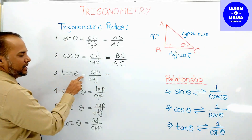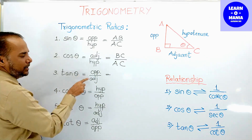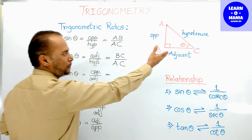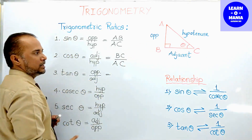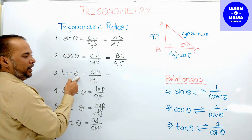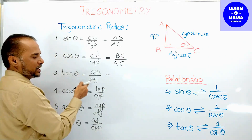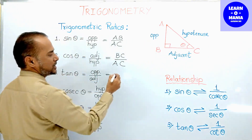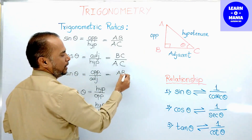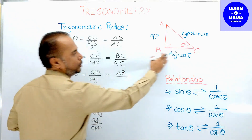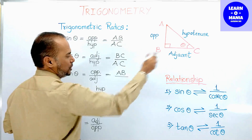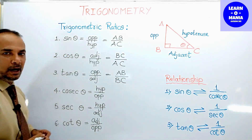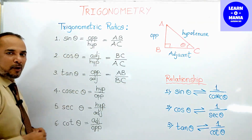Next, tan theta. Tan theta is always equal to opposite side upon adjacent side. With angle C as theta, the opposite side is AB and the adjacent side is BC. So tan theta equals AB upon BC as per this triangle.